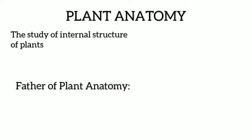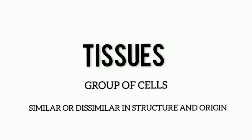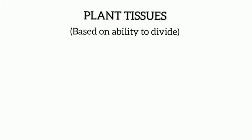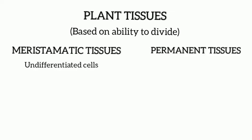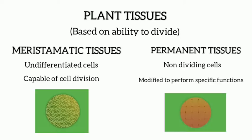We also have a fact to know. The father of plant anatomy was an English physician named Nehemia Grew. Next, we move on to tissues. Tissues are a group of cells that are similar or dissimilar in structure and origin but perform similar function. Plant tissues are classified into two based upon their ability to divide. The two tissues are meristematic tissues and permanent tissues. Meristematic tissues are undifferentiated cells capable of cell division. Permanent tissues contain non-dividing cells which are modified to perform specific functions.